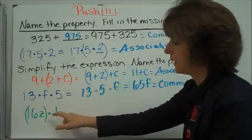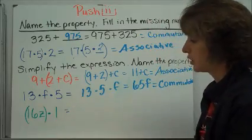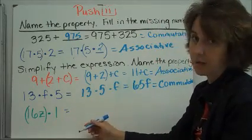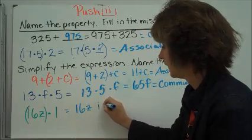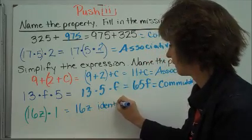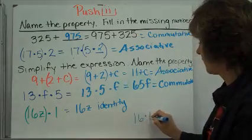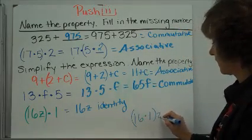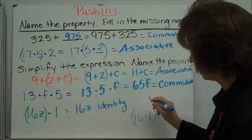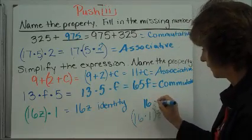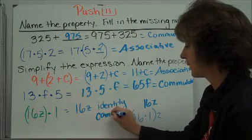For 16 times Z times 1, there are a couple of approaches. You could recognize that anything times 1 is itself, giving 16Z — that's the identity property. Or you could use the commutative property to reorder it as 16 times 1 times Z: 16 times 1 is 16, and then times Z gives 16Z. You could call this the identity property along with the commutative property, or simply the identity property.